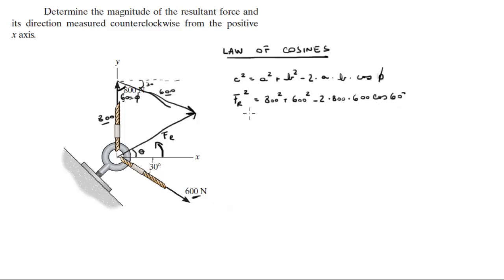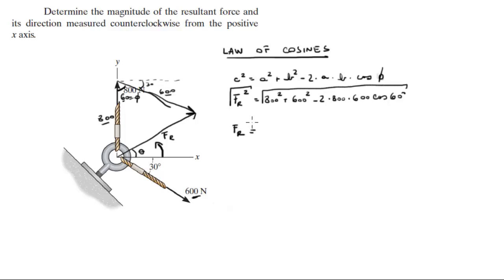Now that we plug in all the values into this formula and take the square root of both sides, we get FR. FR is going to be equal to 721.11 N.